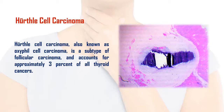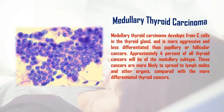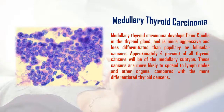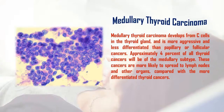Medullary thyroid carcinoma develops from C cells in the thyroid gland and is more aggressive and less differentiated than papillary or follicular cancers. Approximately 4% of all thyroid cancers will be of the medullary subtype. These cancers are more likely to spread to lymph nodes and other organs, compared with the more differentiated thyroid cancers.